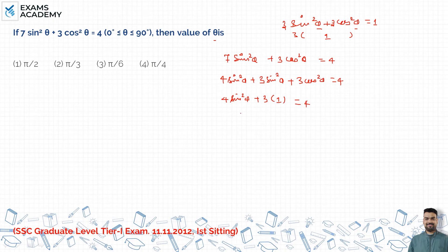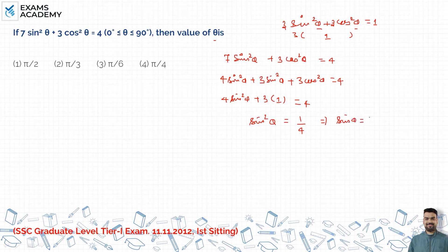अब यह देखे — तो यह 3 plus का 3 यहाँ जाएगा, minus का 3 हो जाएगा, तो 1 बचेगा। तो sin²θ = 1/4 बचा — यह 4 denominator में आ गया। अब sin की value क्या होगी: sin θ = जब आप root लेंगे, तो आएगा 1/2।